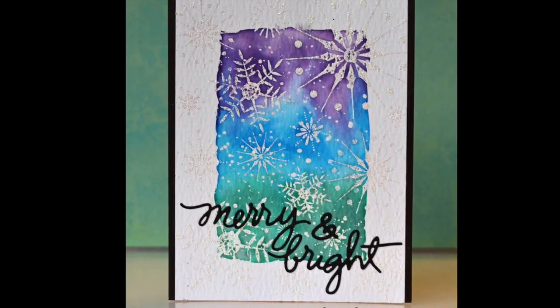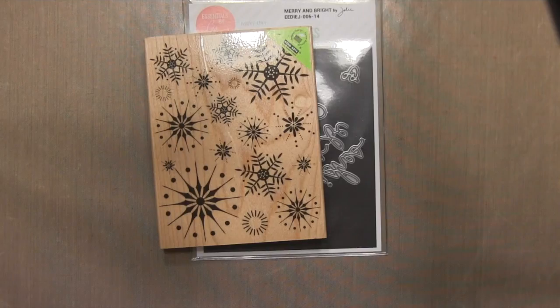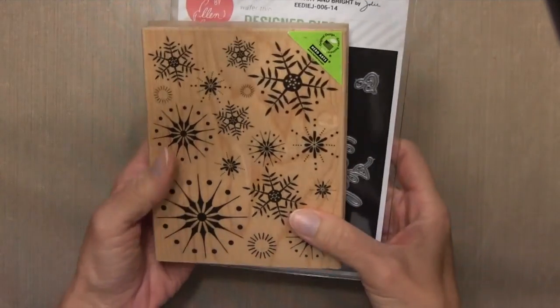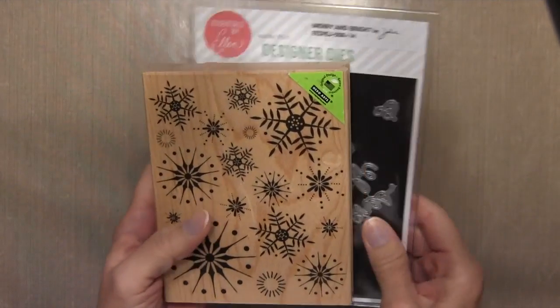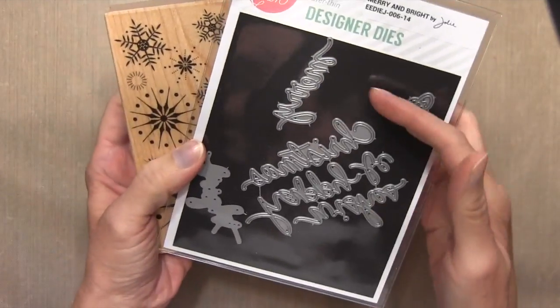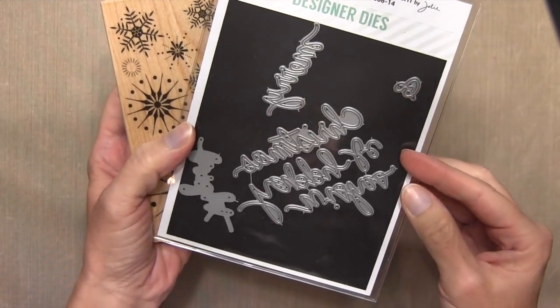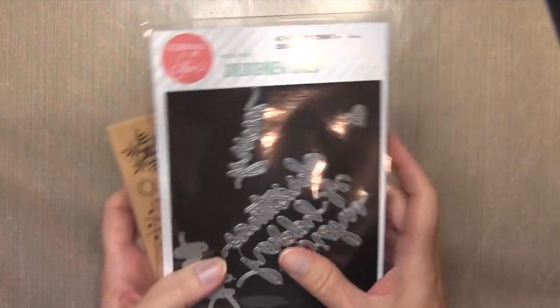Hi everyone, it's Darlene. Welcome back for another card video. Today's card is for the November Snowflake Challenge. I'm going to be using this Stunning Snowflakes Background by Hero Arts and this Merry and Bright Sentiment Set by Ellen Hudson, which released last year.